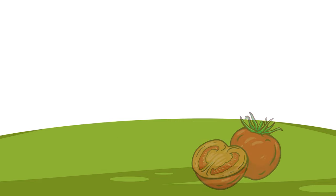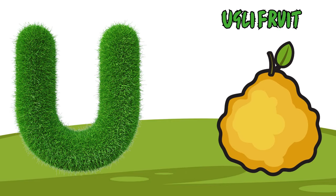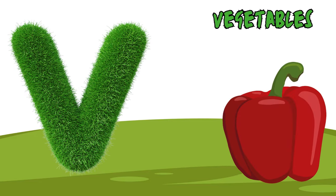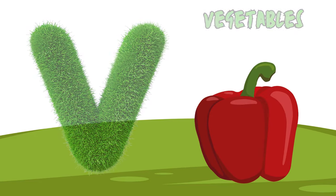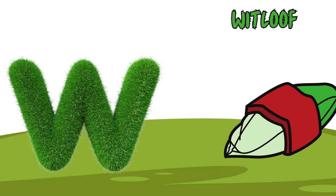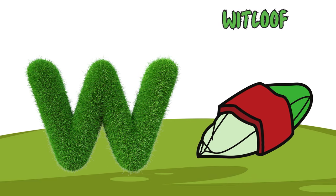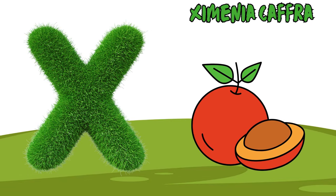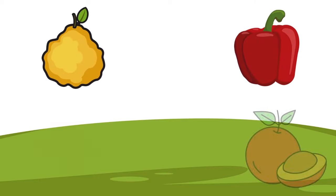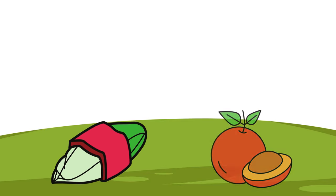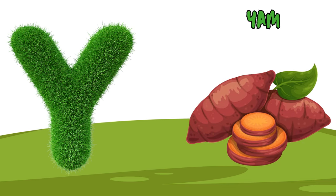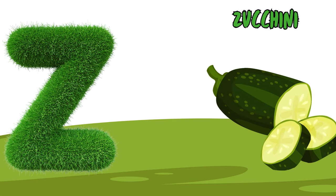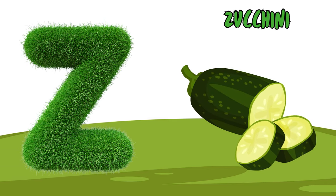U is for ugly fruit. V is for vegetables, v-v-vegetables. W is for white loaf, w-w-white loaf. X is for ximenia, z-z-ximenia. Y is for yam, ya-ya-yam. Z is for zucchini, z-z-zucchini.